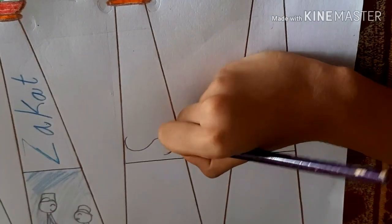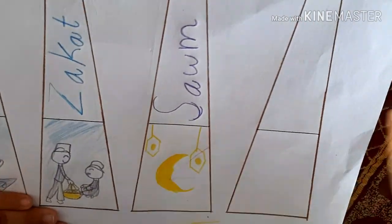The fourth pillar is Sawm, fasting during the month of Ramadan.